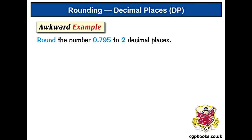Here's a slightly more awkward example. Round the number 0.795 to 2 decimal places. So the last digit is 9, and the decider is 5. And remember, 5 or more rounds up — so we need to round the 9 up.